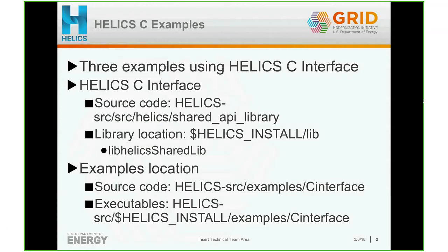If you're trying to link your own application with the Helix C interface, you need to link it with libhelix_shared.lib. It can be found under the Helix install directory under /lib. Once you link this shared library with your application, you might also want to set your LD_LIBRARY_PATH. The source code for the examples is located under helix_source/examples/C_interface, and the executables are under helix_source/helix_install/examples/C_interface.